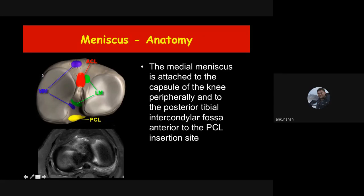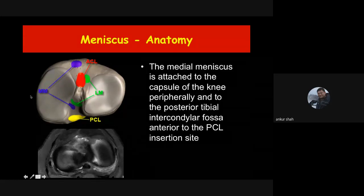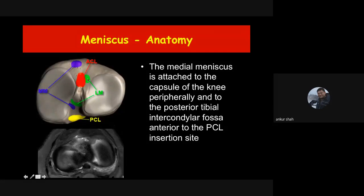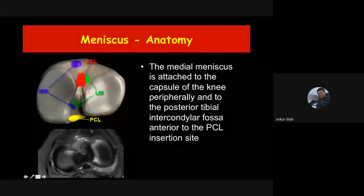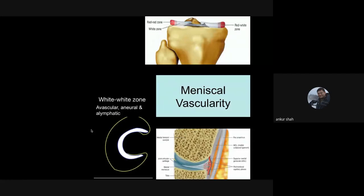The medial meniscus is less mobile because it is more fixed with the joint capsule, making it more prone to tearing. The lateral meniscus is a little freer, so it is less prone to injury. Additionally, the medial side has more weight bearing, making it more prone to injury. That is why medial meniscus injuries are more frequent than lateral meniscus injuries.